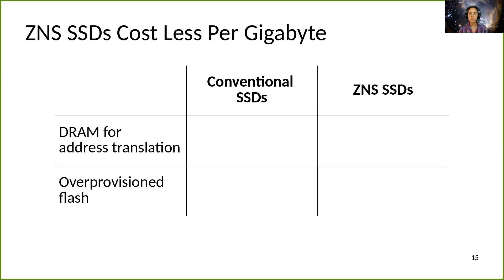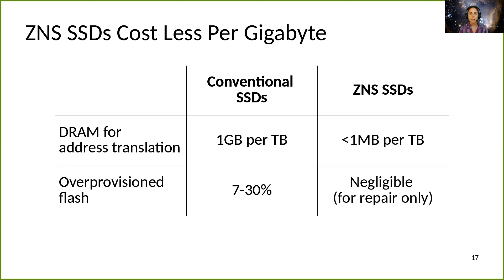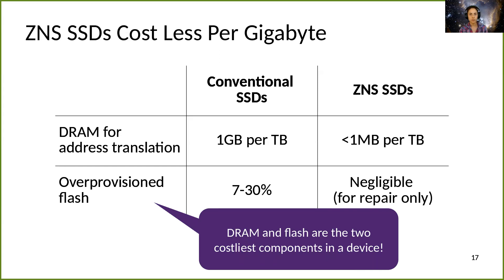A third consequence of the zoned interface is that ZNS SSDs will likely be cheaper, based on what we know from existing devices and from academic work. Conventional devices need a lot of DRAM to support address translation, because page-level mappings help make logical overwrites efficient. ZNS instead does block-level address translation, which requires a fraction of the DRAM per terabyte of logical capacity. Conventional devices also need over-provisioned flash for copying data forward during garbage collection. ZNS SSDs don't do garbage collection, so they need little over-provisioning. The reduced write amplification with ZNS also means there's less need for over-provisioning to replace worn-out blocks. Because DRAM and flash are the two costliest components of a device, this could translate to a substantial reduction in the cost per usable gigabyte.